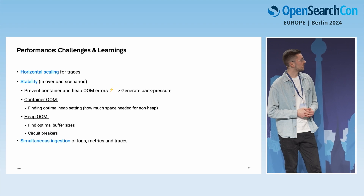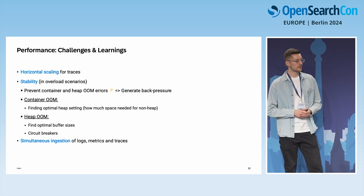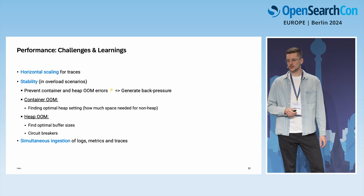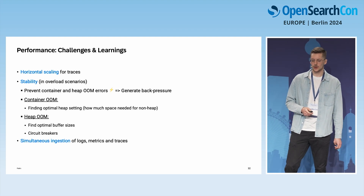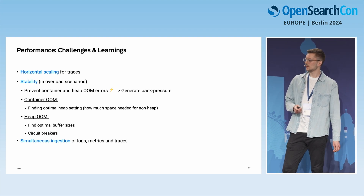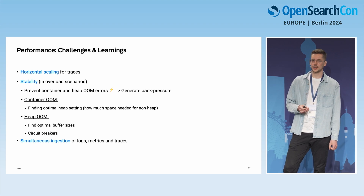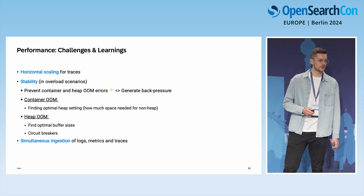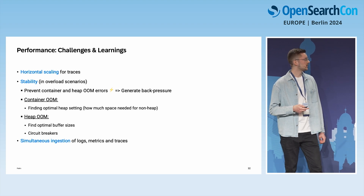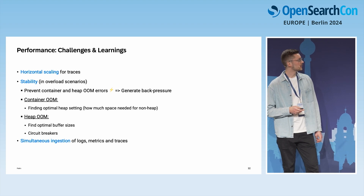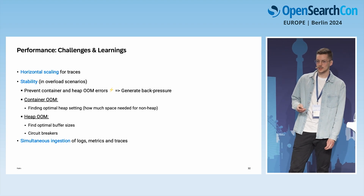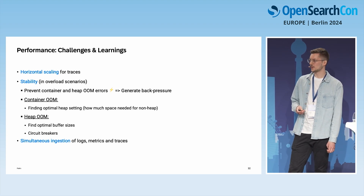Now for some challenges and learnings from performance testing DataPrepper. The first is horizontal scaling for traces — we observed that running only one instance of DataPrepper achieved a higher ingestion rate than running multiple instances. We got some feedback from the DataPrepper team and are looking into improvements, so this is still something we want to address.